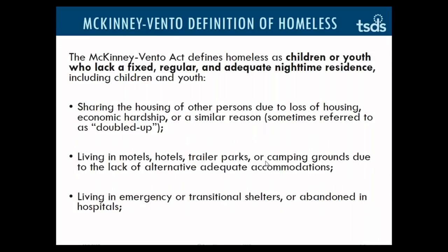To get started, I would like to provide an overview of how the McKinney-Vento Act defines students who are homeless. The federal definition is likely more broad than you realize and includes a wide variety of settings that many students are living in as a result of Hurricane Harvey and its aftermath. The McKinney-Vento Act defines homeless as children or youth who lack a fixed, regular, and adequate nighttime residence, including those who are sharing the housing of other persons due to loss of housing, economic hardship, or a similar reason — sometimes referred to as doubled-up. Many families impacted by the hurricane are currently living with friends or family members in a situation where they would meet the definition of homeless.